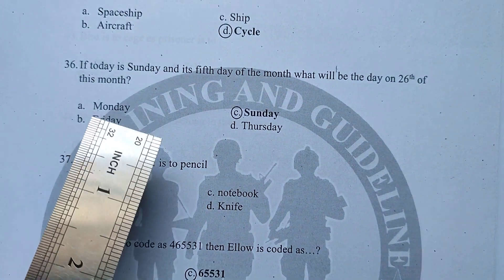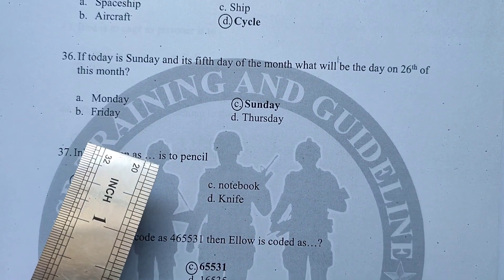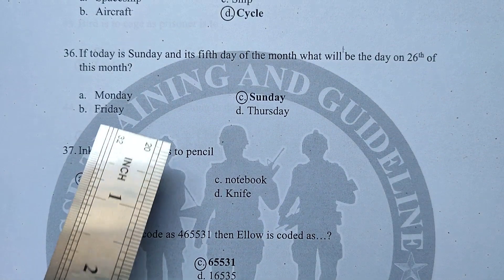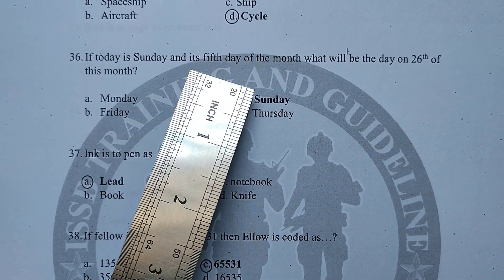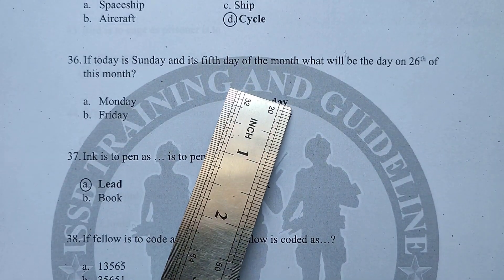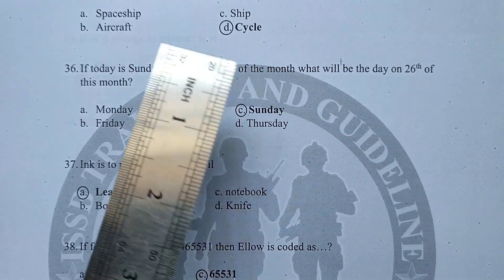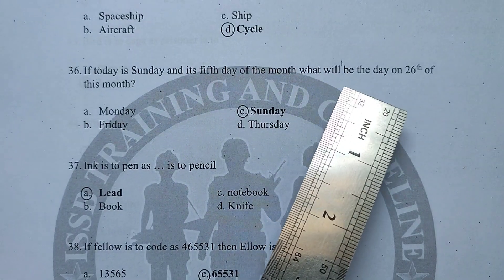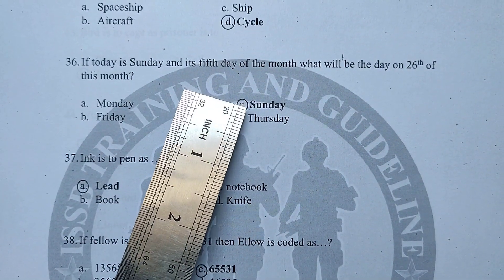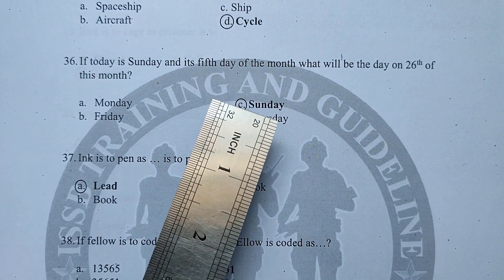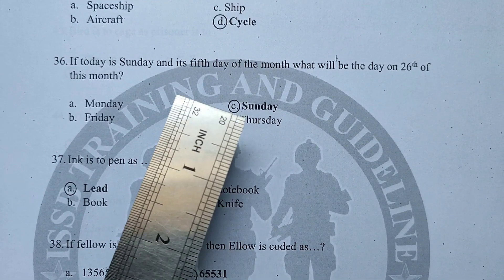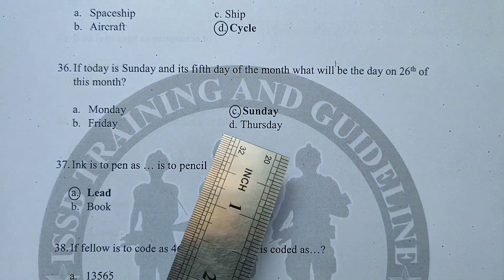Here is the easy trick: instead of counting each day, use the 7-day cycle. Sunday is the 5th. Add 7 to get the 12th, which is also Sunday. Add 7 again to get the 19th — also Sunday. Add 7 again to get the 26th — also Sunday. So the answer is Sunday. Similarly, if today is Thursday and it is the 6th, adding 7 gives you the 13th as Thursday, and so on. This time management trick saves you 15 to 20 seconds per question.